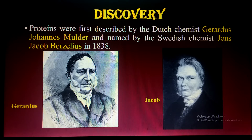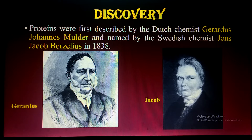Protein was first discovered by the Dutch scientist Gerardus Johannes Mulder and the Swedish chemist Jöns Jacob Berzelius in 1838. On the right side you can see Berzelius, and on the left side Mulder, who first identified the amino acid leucine. This is a brief overview of the history of protein.